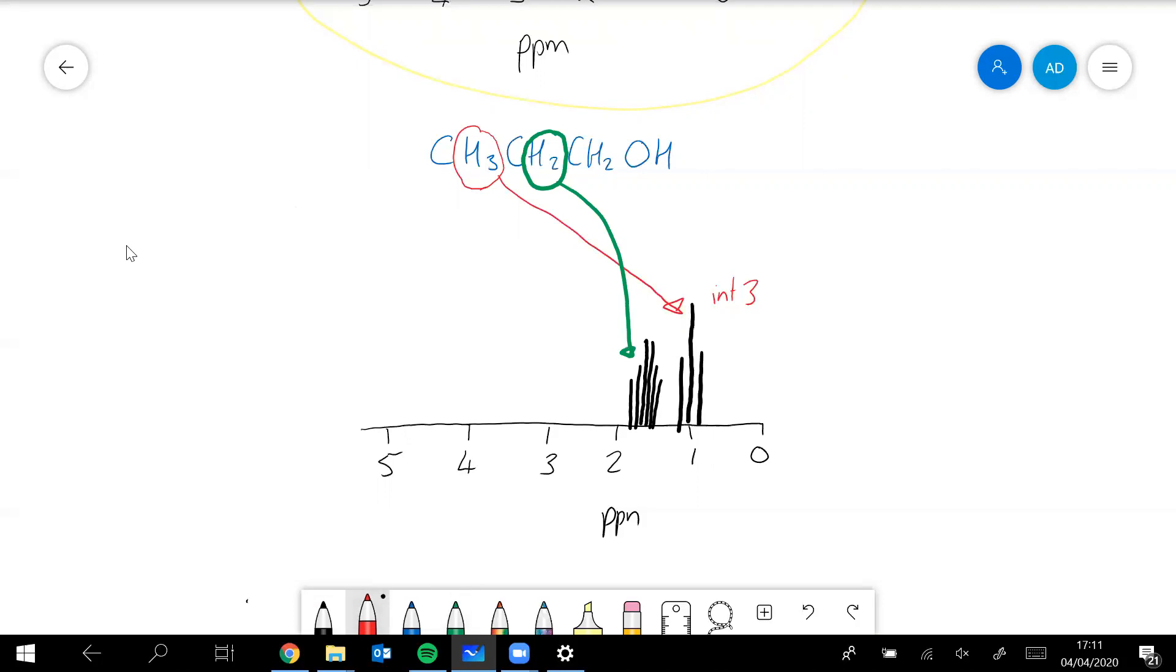Integrated value here of two. Let's just think about these ones now, these two. They are attached to a carbon which is attached to an oxygen, so the ppm is going to be quite high, it's going to be about four.